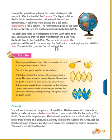In the same way, the earth spins on an imaginary line called its axis. We cannot see this line in reality. It is an imaginary line, just like the rod in the globe. So the earth's axis is just like the rod in a globe.